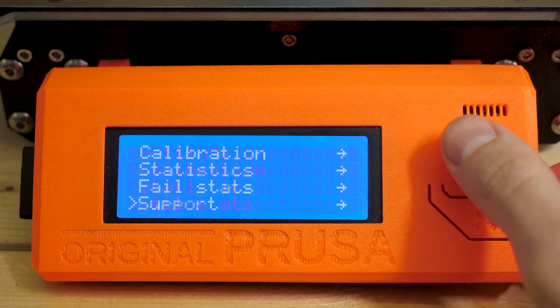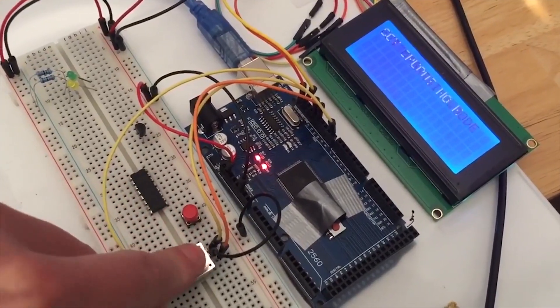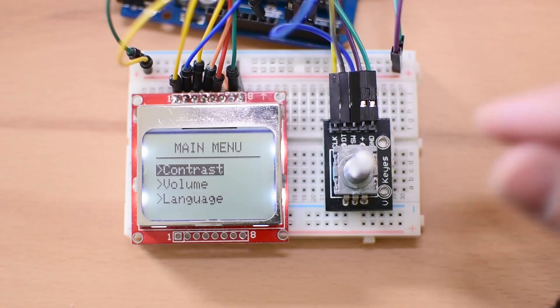Rotary encoders. They seem like the perfect user interface for your Arduino project, but if you've ever tried to use them, they just suck.